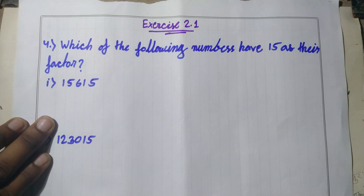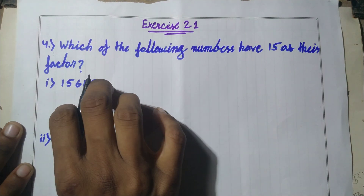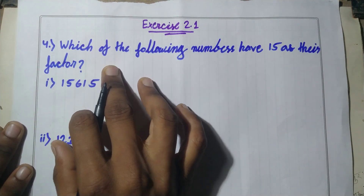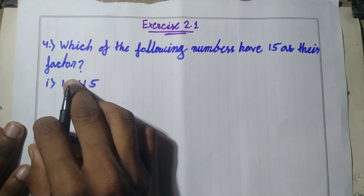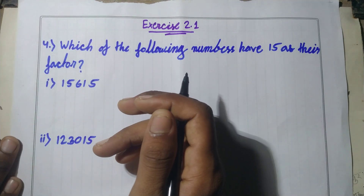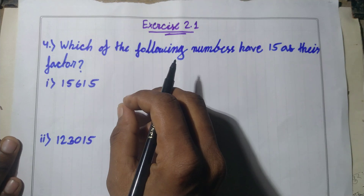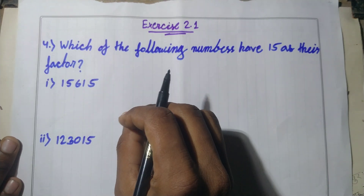Welcome back. In today's episode, let's discuss Exercise 2.1, Question Number 4: which of the following numbers have 15 as their factor? First of all, what is a factor? A factor is a number by which another number is exactly divisible.